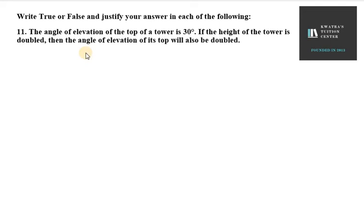Hello everyone, let's start with question number 11. It says the angle of elevation of the top of a tower is 30 degrees. If the height of the tower is doubled, then the angle of elevation of its top will also be doubled.